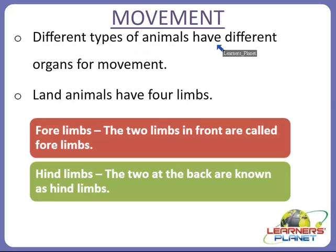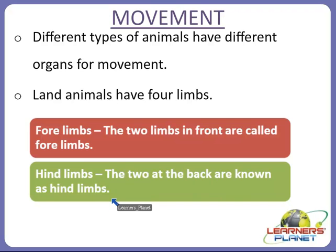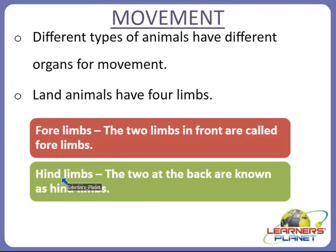Different types of animals have different organs for movement, just as they have different organs for breathing. Land animals have four limbs divided into fore limbs and hind limbs. The two limbs in the front are called fore limbs, and the two limbs at the back are known as hind limbs. So land animals have a total of four limbs — two fore limbs and two hind limbs.